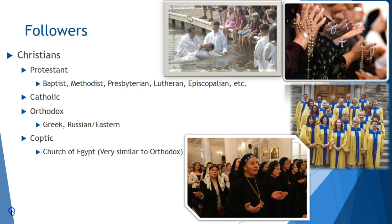Followers of Christianity are called Christians, and there are many different denominations. Out of all of the religions we will cover, Christianity is one of the most diverse in terms of different types and denominations of followers. Christians are usually categorized by three big categories: Protestants, Catholics, or Orthodox. Protestants are the most diverse and include many different types of churches, such as Baptists, Methodists, Presbyterians, Lutherans, Episcopalians, and many more. The Orthodox Church is very similar to the Catholic Church and breaks down into two main types: the Greek Orthodox Church and the Russian or Eastern Orthodox Church. In Egypt, there is a unique and very ancient form of Christianity known as Coptic Christian. They have their own Pope in Egypt and are more religiously aligned with Orthodox Christianity.